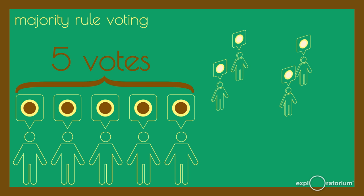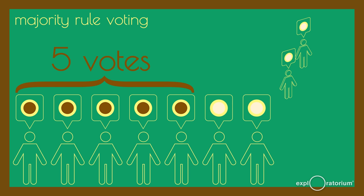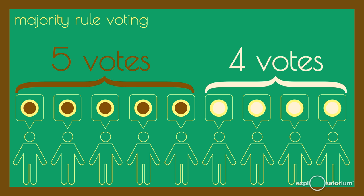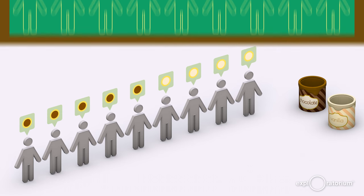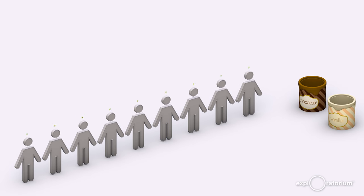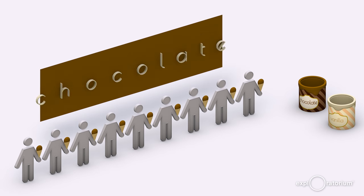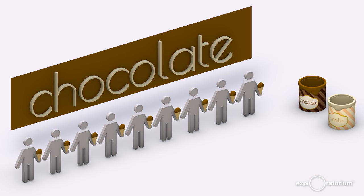In this group, there are five votes for chocolate and only four votes for vanilla. Chocolate, therefore, is a better choice for this group, since it leads to a higher level of overall group satisfaction. This is what it looks like when a group makes a decision. And as long as there are only two flavors to choose from, this type of voting is guaranteed to satisfy a majority of the voters.